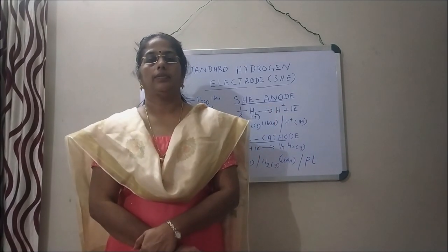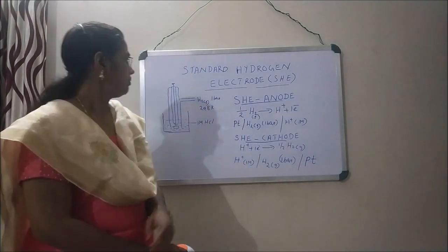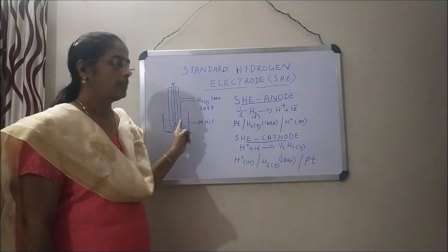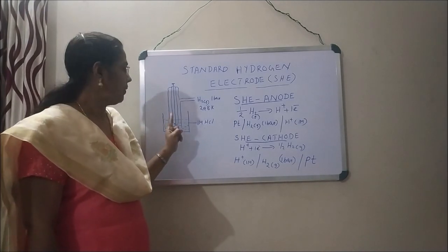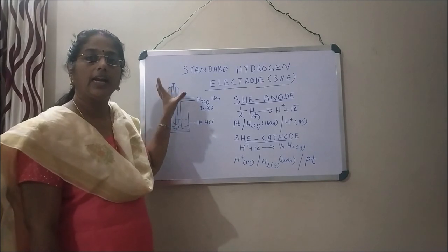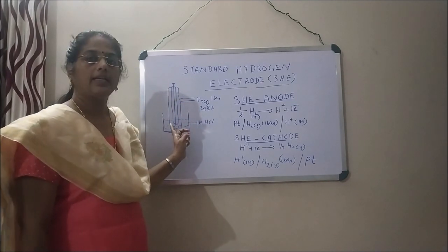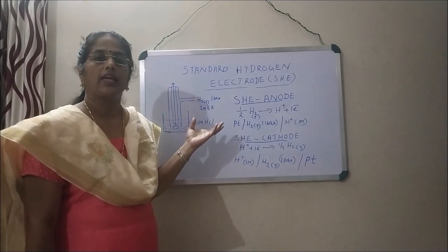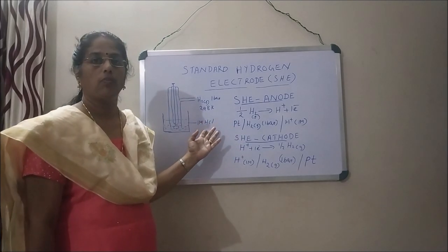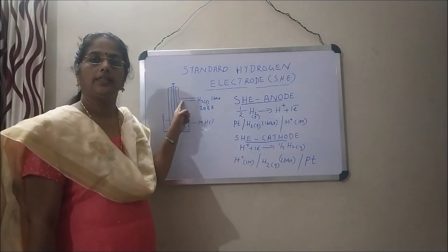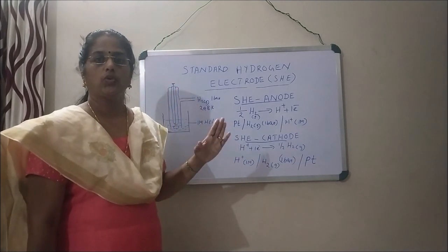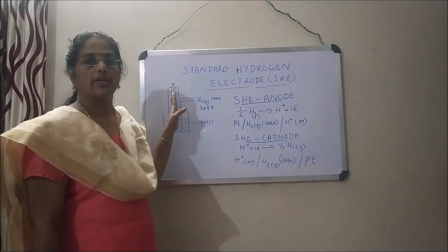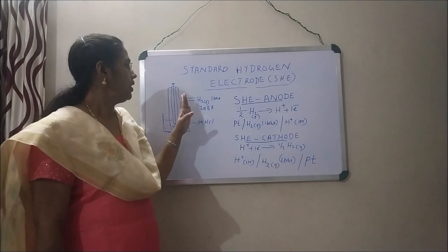The standard hydrogen electrode consists of a platinum wire connected to a platinum foil, and that platinum wire and foil are sealed in a glass tube. For example, we take HCl solution with a concentration of 1 molar, and hydrogen gas with a pressure of 1 bar at a temperature of 298 Kelvin is passed through this glass tube.